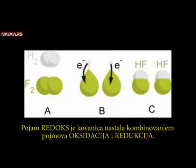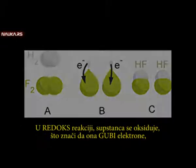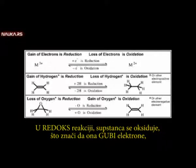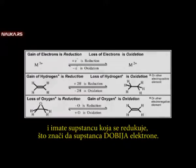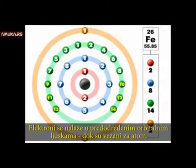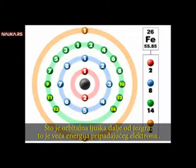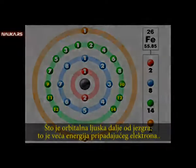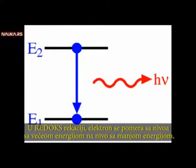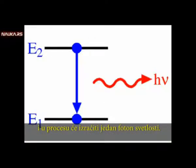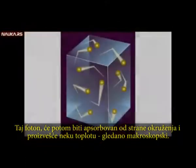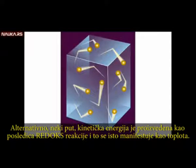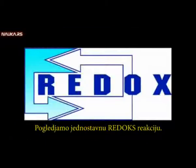Redox is a portmanteau of reduction-oxidation. In a redox reaction, you have a substance being oxidized, which means the substance is losing electrons, and you have a substance being reduced, which means the substance is gaining electrons. Electrons exist in discrete orbital shells when bound to an atom — the further away the orbital shell is from the nucleus, the higher the energy level. In a redox reaction, electrons move from a high energy state to a lower energy state and give off a photon of light as a result. This photon is absorbed by the surrounding environment and produces heat from the macroscopic view. Alternatively, sometimes kinetic energy is produced in the product molecules of the redox reaction, which also manifests as heat.